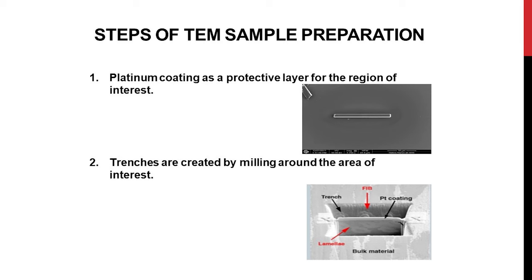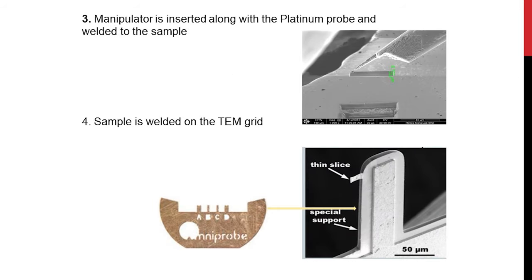Once the platinum is deposited, we create trenches around this deposition area, which is actually termed as milling — this is also called a cross section. The next step involves the in-situ manipulator, which aids you in sample preparation. We get the probe very close to the sample where the cut has been made — this process is termed lift-off. We weld the sample lamella to the probe with the help of platinum, lift off the lamella, and finally attach it to the TEM grid. This is called a half moon grid which has different slots in it.